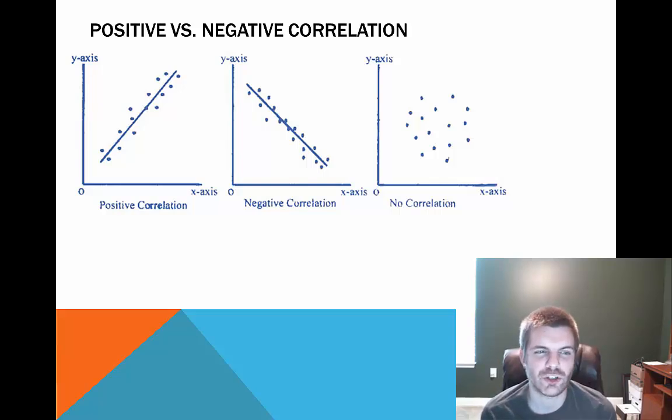If you take a look here at these charts, you have some basic scatter plots. You have a positive correlation. This means that when one of your values is going up, the other value is also going up as well. Or if one value was to go down, the other value is also going to go down. In a negative correlation though, the values are now inversely proportional. When one value goes up, the other value goes down. Or if one value goes down, the other value goes up.